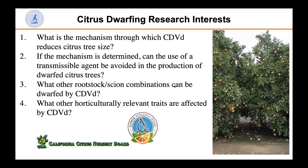As a biologist, I wanted to understand how citrus dwarfine viroid works, and so I began my work and asked several research questions. First and foremost: what is the mechanism through which citrus dwarfine viroid reduces citrus tree size? If the mechanism is determined, can the use of a transmissible agent be avoided in the production of dwarfed citrus trees? What other rootstock combinations can be dwarfed by citrus dwarfine viroid? And what other horticulturally relevant traits are affected — for example, precocity, or when do they flower compared to control trees? Today, however, we're going to focus on the first question.